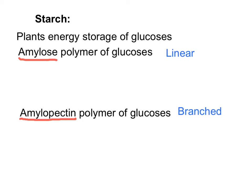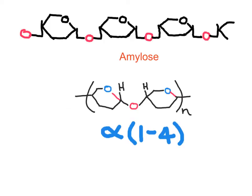While amylose is linear, amylopectin is branched. Depending on the plant species, most starches will have between 20 and 30 percent amylose and between 70 and 90 percent amylopectin.